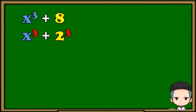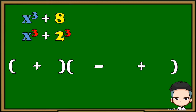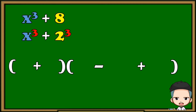Now that they are in cube form, we only pay attention to their bases. Prepare two sets of parentheses with operations, but be careful — if the given is sum of two cubes, the operation in the first parenthesis must be addition and the first operation in the second parenthesis should be subtraction. Next, copy the base of the first term, then copy the base of the second term.